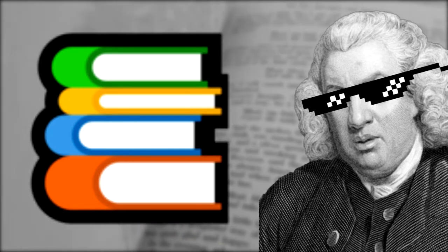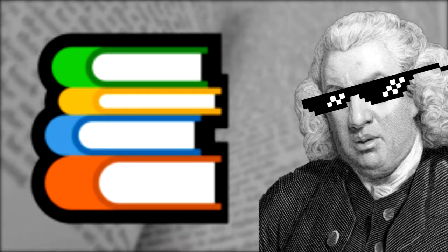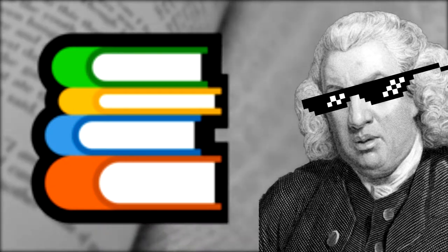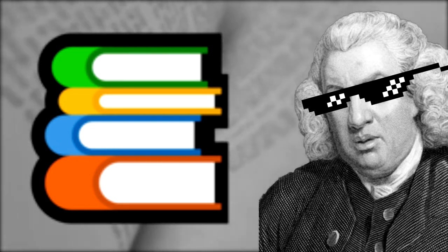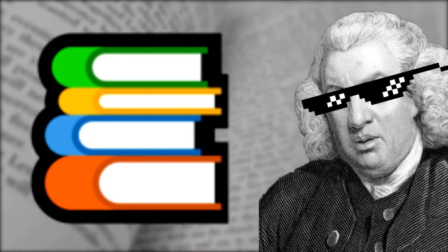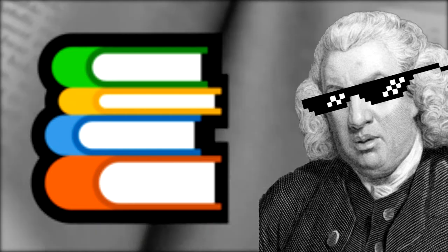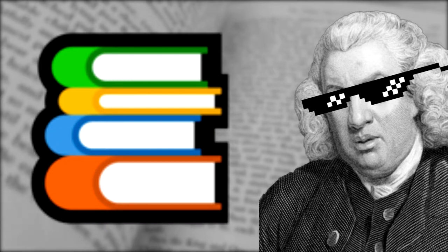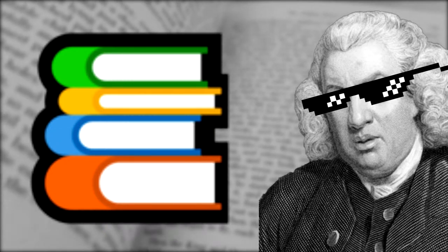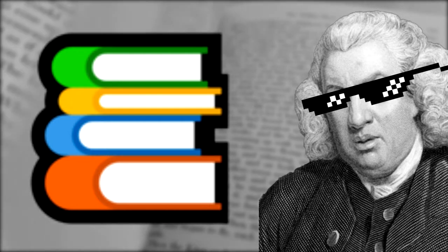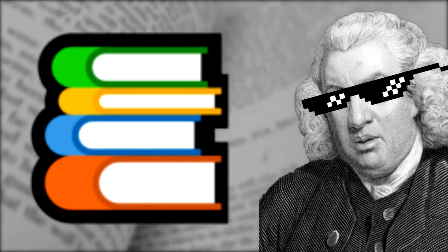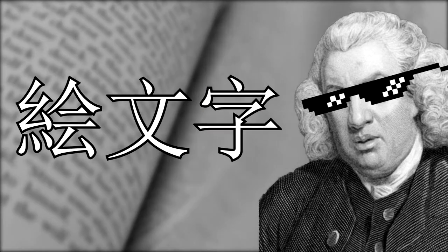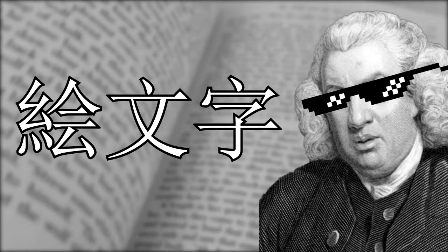The funny thing about English is that most of its words are borrowings from other languages like Spanish, French, Latin, and many others. After World War II, America's relationship with Japan got a lot closer, and Japanese began borrowing a lot of words from English — and we absorbed some of theirs in return. They were mostly cultural words like bonsai, sushi, teriyaki, and so on. Emoji is just like those words, directly taken from Japanese.